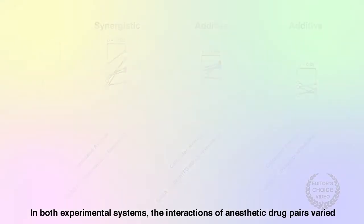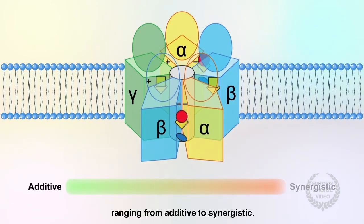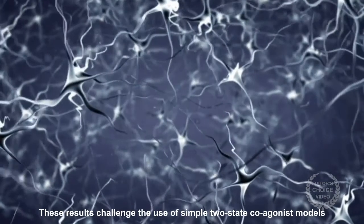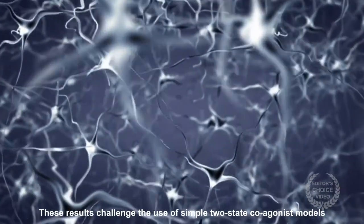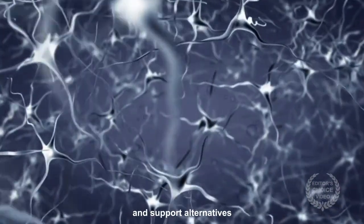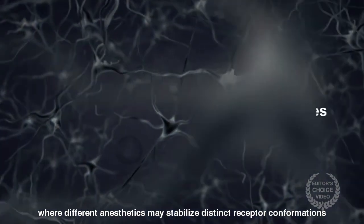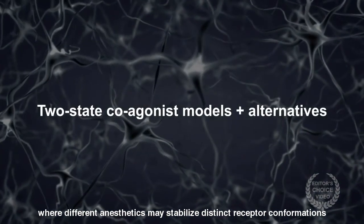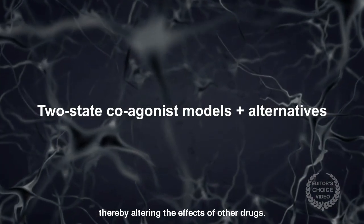In both experimental systems, the interactions of anesthetic drug pairs varied, ranging from additive to synergistic. These results challenge the use of simple two-state coagonist models and support alternatives, where different anesthetics may stabilize distinct receptor conformations, thereby altering the effects of other drugs.